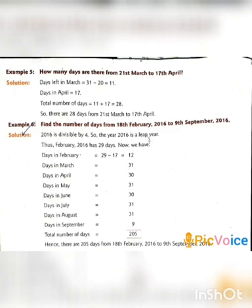Another question: find the number of days from 18th February 2016 to 9th September 2016. Since 2016 is divisible by 4, the year 2016 is a leap year, so February has 29 days in 2016. Days in February: 29 minus 17 equals 12. Then, days in March: 31, April: 30, May: 31, June: 30, July: 31, August: 31, and days in September: 9. The total number of days is 205. Hence, there are 205 days from 18th February 2016 to 9th September 2016.